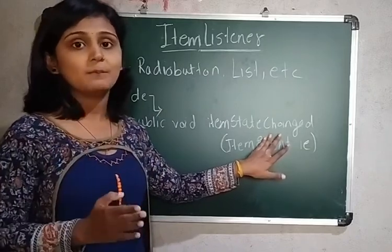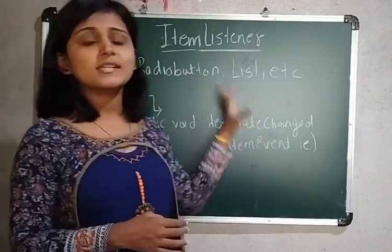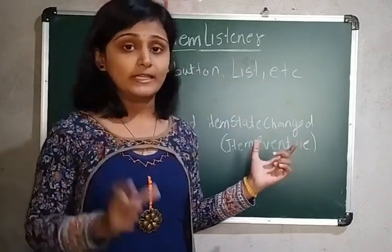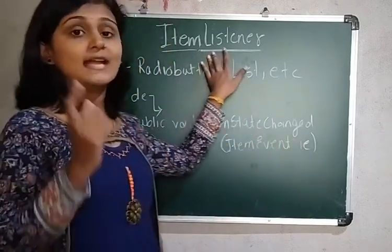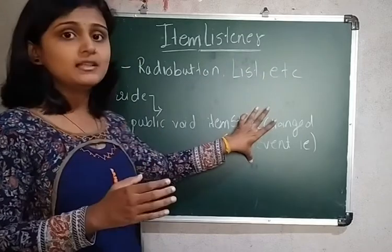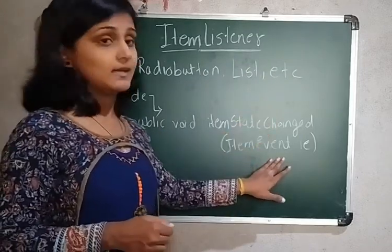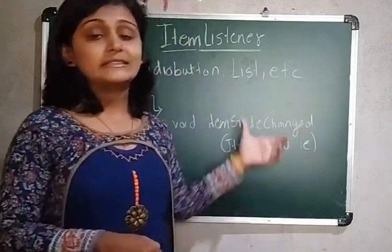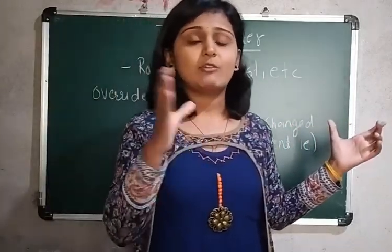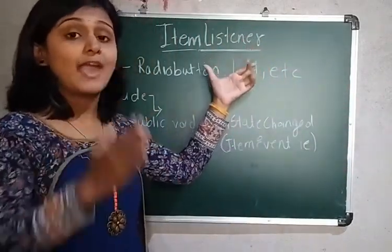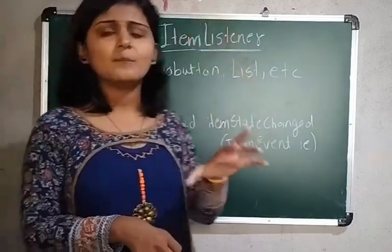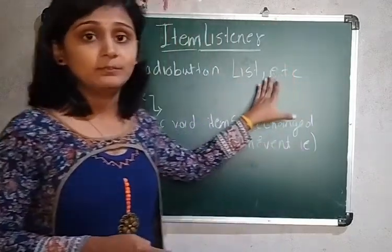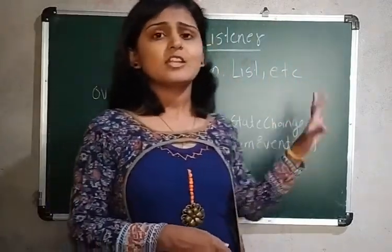Remember this method because these methods are very important. When doing problems regarding event handling, first you have to import the package java.awt.event.*, then you have to implement the Item Listener and override the method, and pass the ItemEvent. Before the method, we have to register the source with the listener using addItemListener. Whatever component we are going to perform the action on must first be registered with the listener.